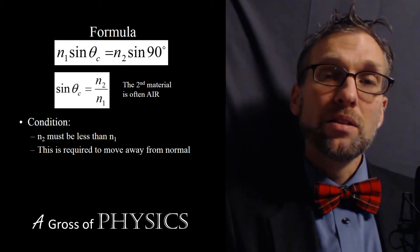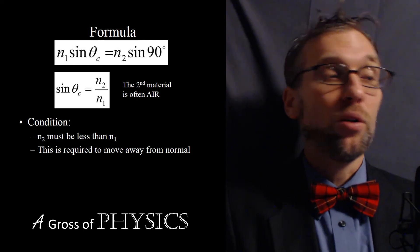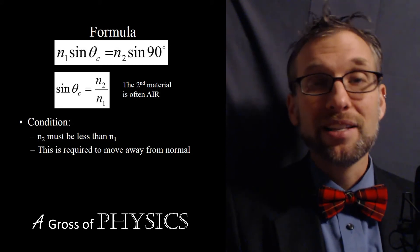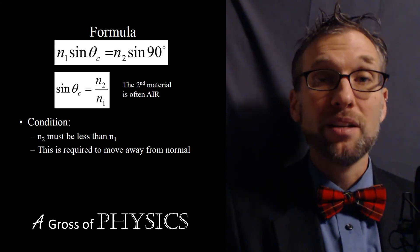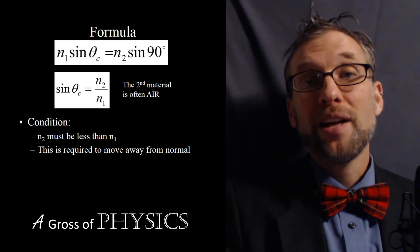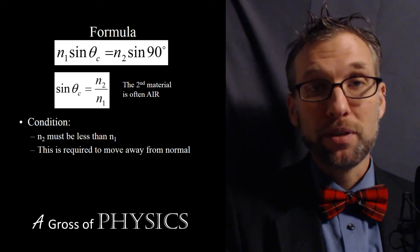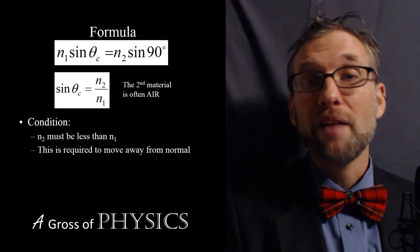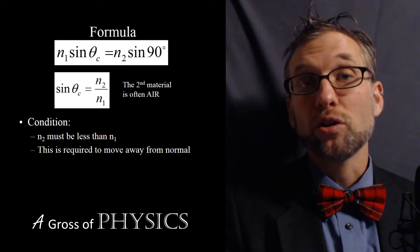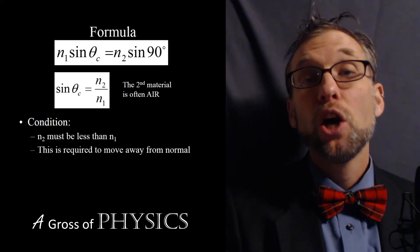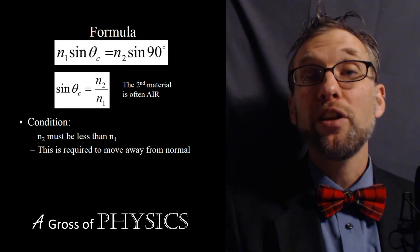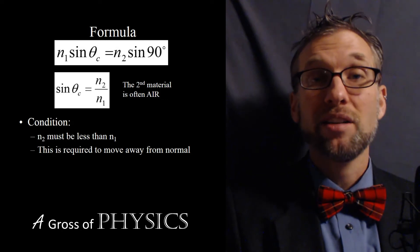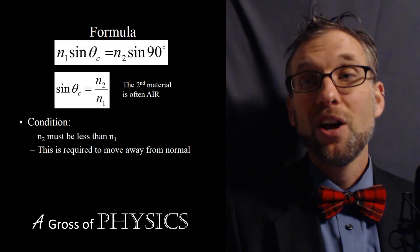Now, if you're bigger than the critical angle, what happens to the light? The light is actually trapped inside the material. We have a fancy name for that — total internal reflection. So if you're bigger than the critical angle, the light doesn't escape; it actually stays stuck inside the material.